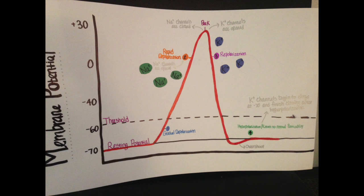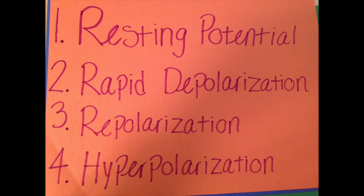When the cell is responding to a stimuli, the voltage changes in order to start action potential. There are four stages in creating an action potential: resting potential, rapid depolarization, repolarization, and hyperpolarization.